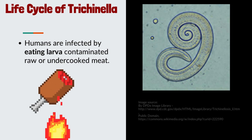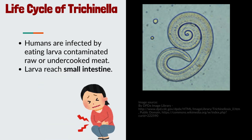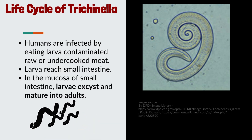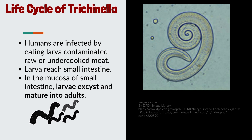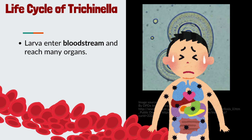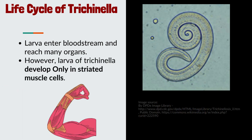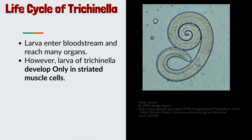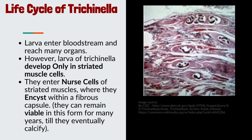Life cycle of Trichinella: humans are infected by eating larvae-contaminated raw or undercooked meat. Larvae reach the small intestine, where in the mucosa they excyst and mature into adults. New eggs hatch within adult female worms and larvae are released in the bowel. Larvae enter the bloodstream and reach many organs; however, larvae of Trichinella develop only in striated muscle cells. They enter nurse cells of striated muscles, where they encyst within a fibrous capsule, remaining viable in this form for many years until they eventually calcify.